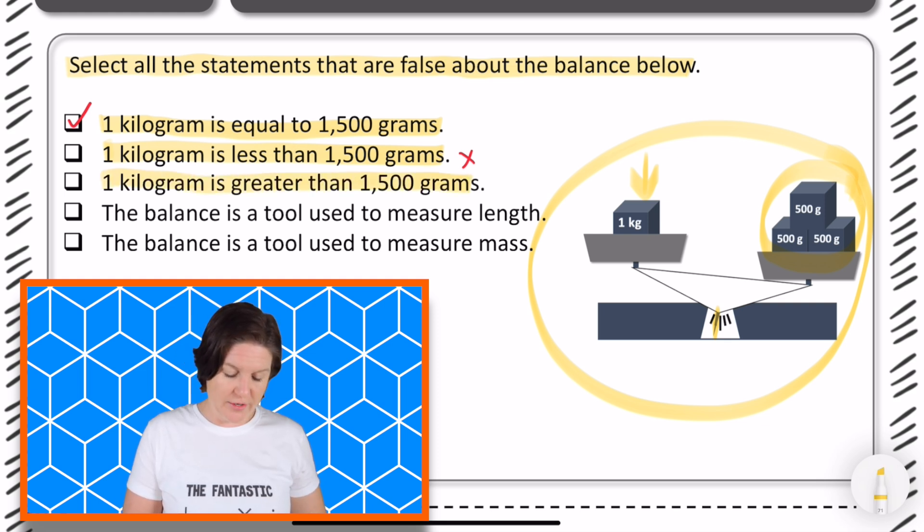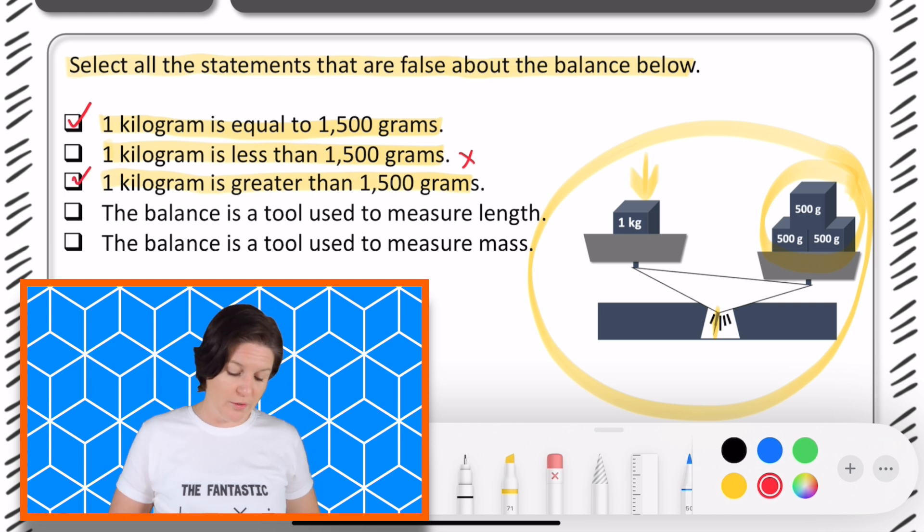One kilogram is greater than 1,500 grams. Well, we know that that one is false, right? It's less than. So, we can go ahead and choose that one because we're looking for the ones that are false.